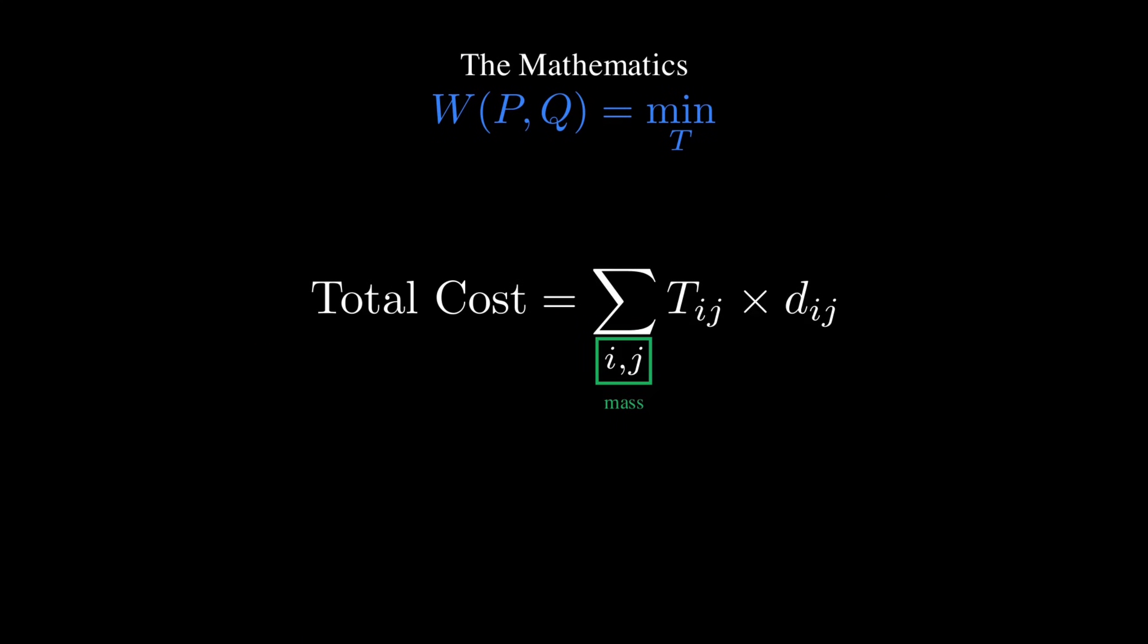The total cost is the sum. Each mass times its distance traveled. We search over all valid plans to find the one with the lowest cost.